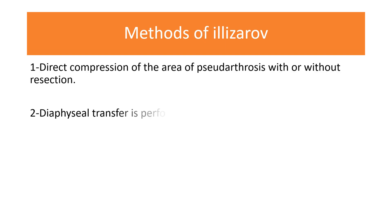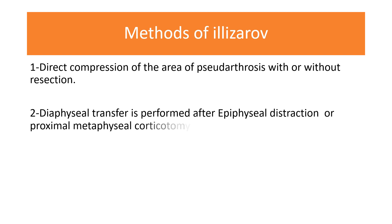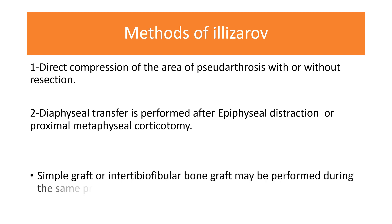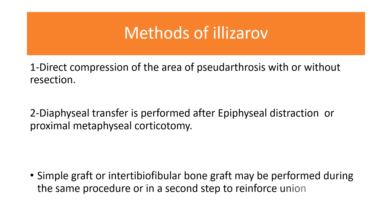The Ilizarov technique involves direct compression of the area of pseudarthrosis, with or without resection of the fibrous hamartoma. If resection is performed, diaphyseal transfer is done after epiphyseal distraction or proximal metaphyseal corticotomy. Small grafts or intertibio-fibular grafts may be performed during the same procedure or in a second step to reinforce union.